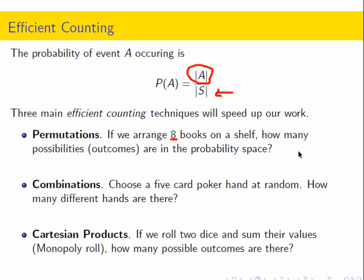Finally, we have a Cartesian product — this is just two different probability spaces joined together. For example, suppose that I rolled two dice and summed their values. The two different dice rolls are actually independent of each other. What happens with the green die has nothing to do with what happens with the red die. Basically, they're a Cartesian product, and we just multiply to find out how many outcomes are possible.